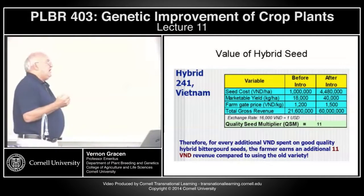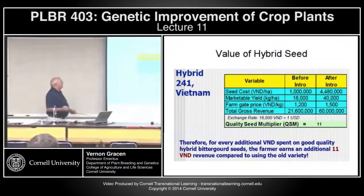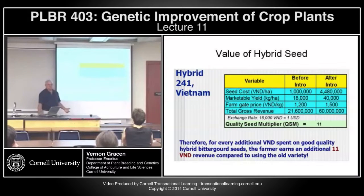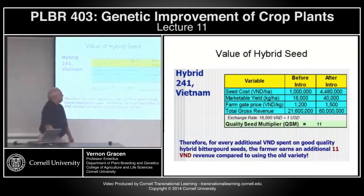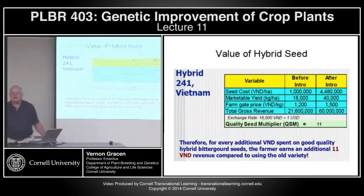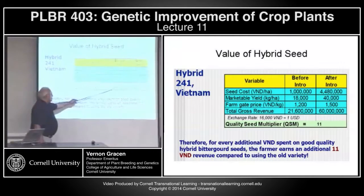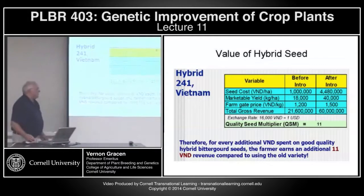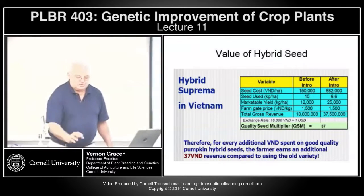A friend of mine in Thailand working with East-West Seed, Simon Dehup, has developed a quality seed multiplier: he takes the cost of hybrids minus the original cost, divides that into the total profits of hybrids minus the original profits. For a hybrid bitter gourd in Vietnam, the quality seed multiplier is 11 — for every additional Vietnamese dollar a farmer spends on hybrid seed, he earns an additional $11 in revenue. That's better than the three-to-one rule of thumb that started the U.S. hybrid corn business.